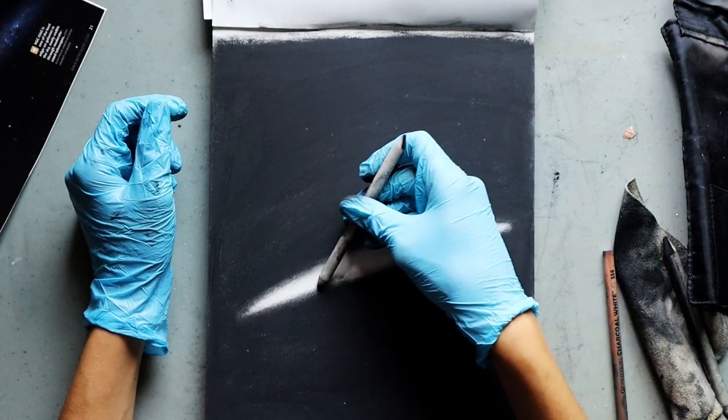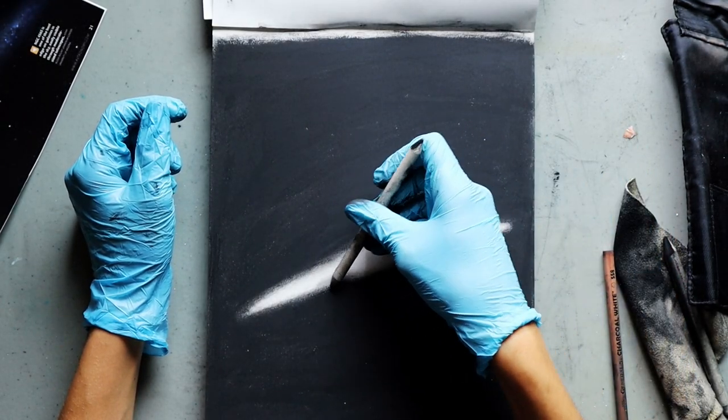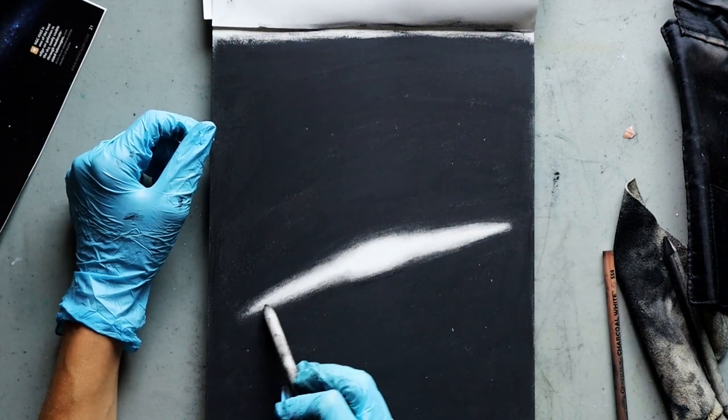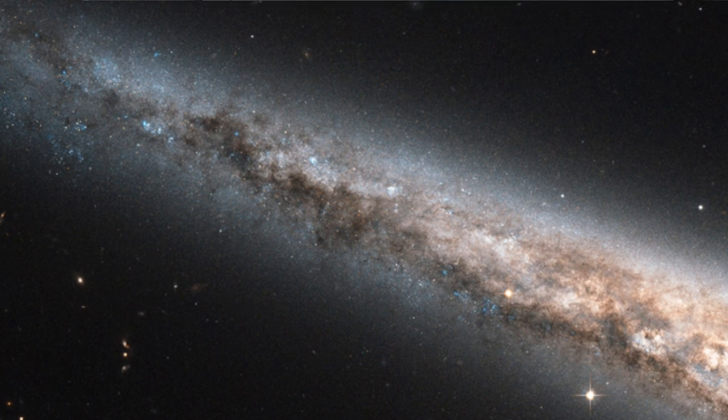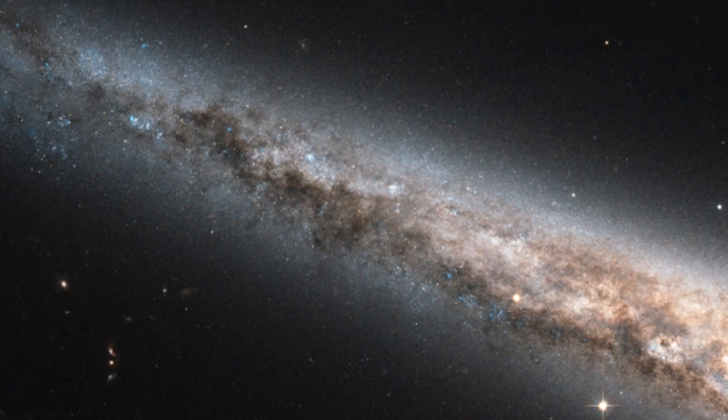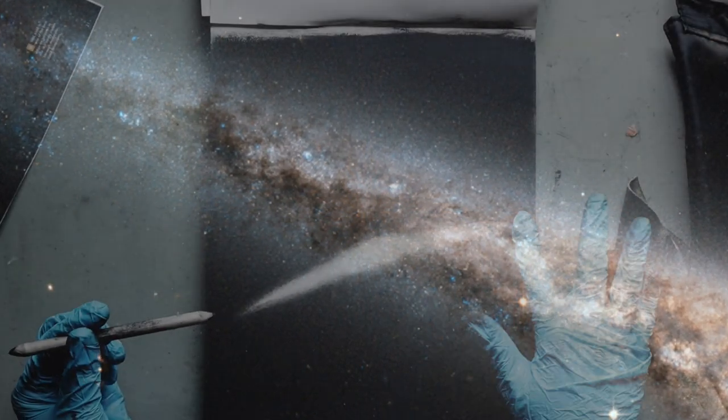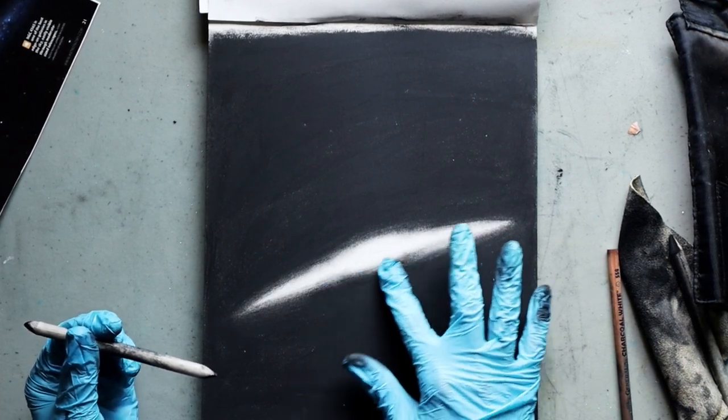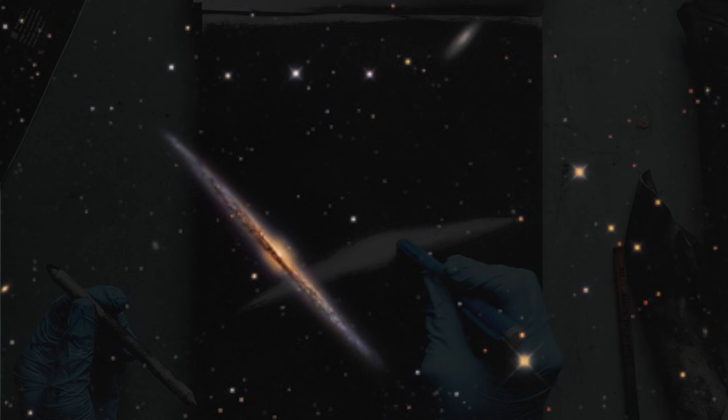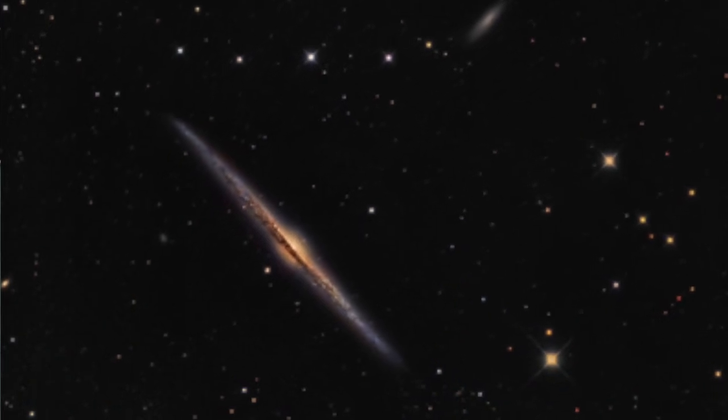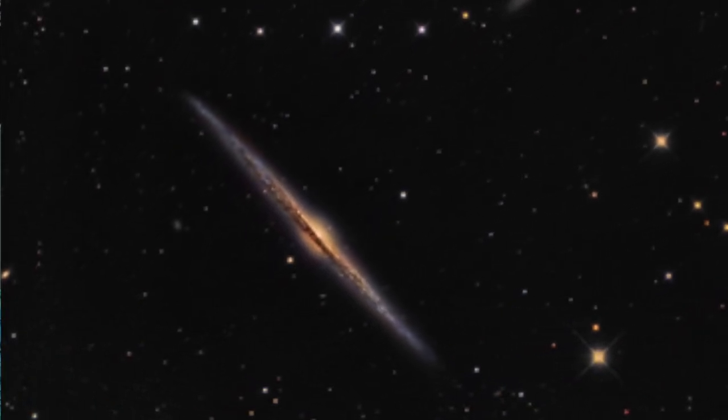This bright edge-on spiral galaxy is very popular because it's a view that may resemble our own galaxy, the Milky Way. The size of this galaxy is estimated to be over 250,000 to 300,000 light-years in diameter.